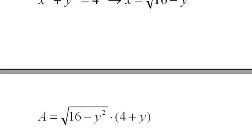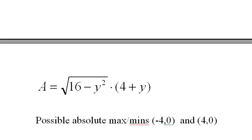I know the largest function value will be the maximum and the smallest function value will be the minimum. Possible max and mins, of course, the endpoints negative four and four, and I get zero each time. Remember this is y and A, not x and y, so be careful of that.